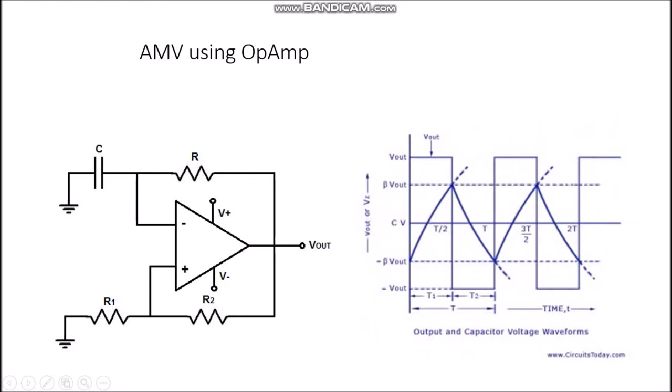Let us assume that the output initially is at plus Vz. As soon as the output is at plus Vz, the reference voltage at the non-inverting terminal due to the resistor divider network will be beta times Vz, where beta equals R1 divided by (R1 + R2). Initially, if the voltage across the capacitor is zero, it maintains this at plus Vz. Eventually, as the output is at plus Vz, this capacitor will try to charge, and the time will come when the voltage across the capacitor goes just above beta Vz.